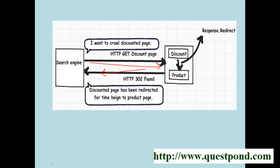The HTTP 302 status tells the search engine that the discount page has been redirected temporarily to the products page. So the search engine expects that the next time it comes to crawl the discount page, it should get some data or the page should not redirect anymore. If it finds a redirect again, it may penalize you for duplicate content. So response.redirect is not the right way to solve this problem.